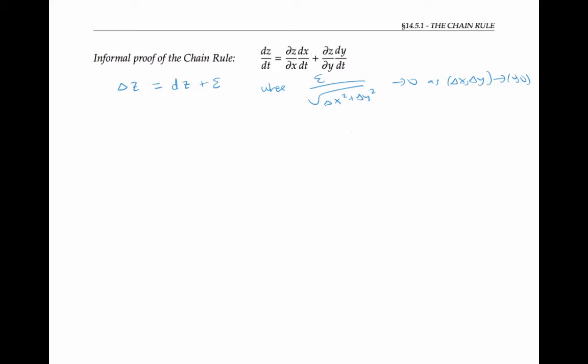I can rewrite this by expanding out the differential, that's f sub x delta x plus f sub y delta y. Now I'll divide all my terms by delta t. And from calculus one, I can write dz/dt is the limit as delta t goes to zero of delta z over delta t. So that's the limit of the expression above.